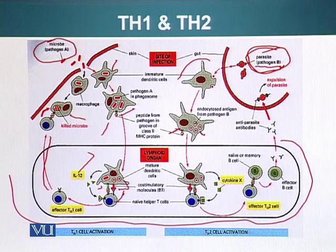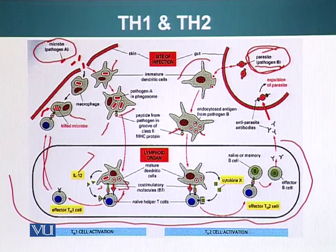When this happened, our antigen presenting cell — the dendritic cell — also became mature and it started producing the co-stimulatory molecule B7, which is shown right here.